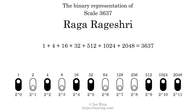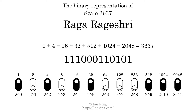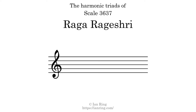The scale number not only enumerates the scale with a unique index, but it also literally describes the tonal content of the scale. Represented as a binary number in base 2, the scale number is 1, 1, 1, 0, 0, 0, 1, 1, 0, 1, 0, 1. Here are the harmonic triads present in this scale.